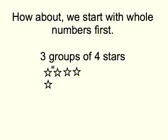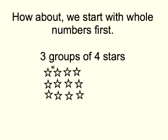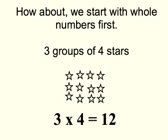Now we're going to make our second group of four stars. And our third group of four stars. So now we have one, two, three groups of four stars. And if we count all of our stars, we have 12 stars. Another way of saying that is three times four is 12. And that's how we work with whole numbers.